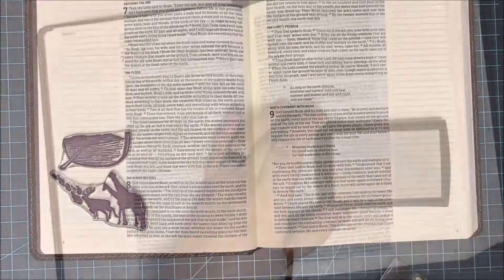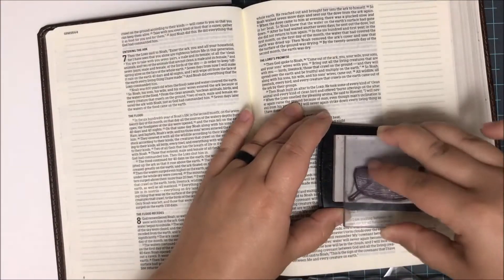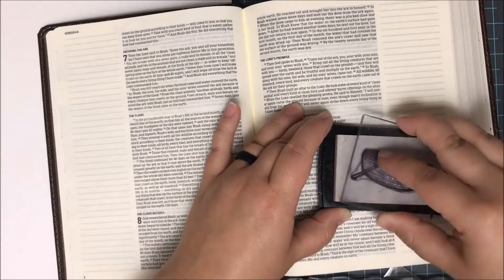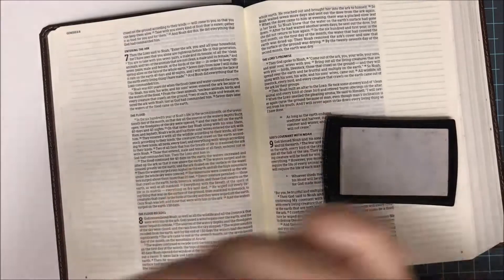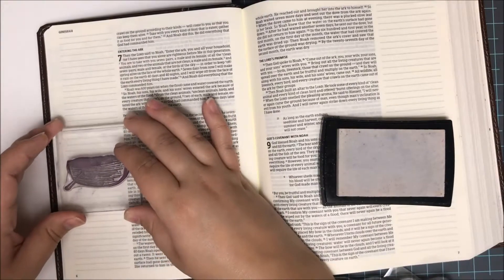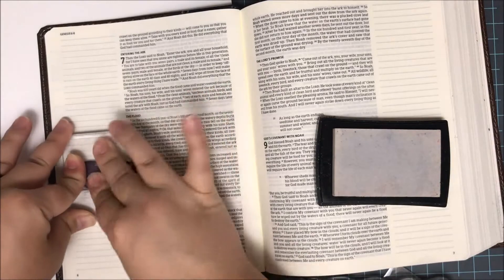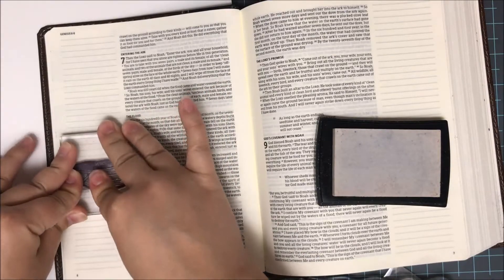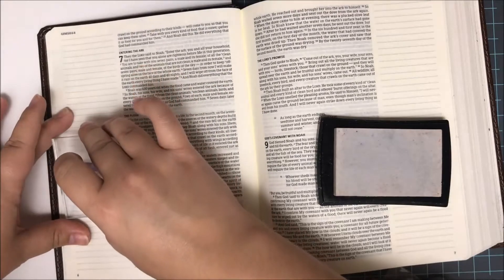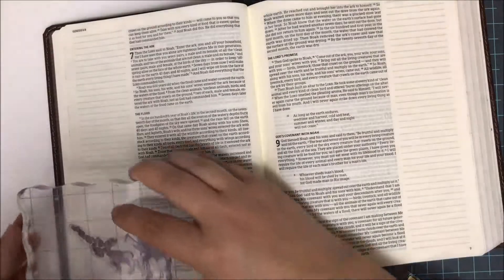I'm going to be working on both of these pages here. So I am starting off in Genesis chapters 7 through 9 and the entire Noah's Ark story goes across these two pages in my Bible. So that's where I'm going to be working today. I wanted to create two different scenes on both pages and this first one I'm going to start on the left hand side. And it is going to be the scene where all the animals are loading into the ark.